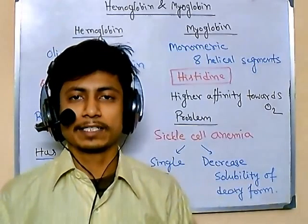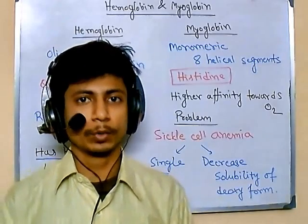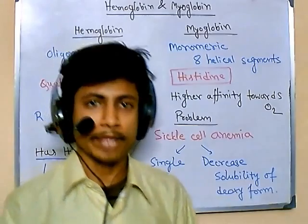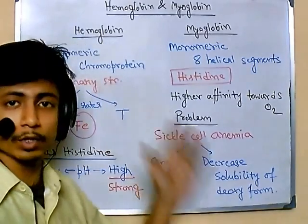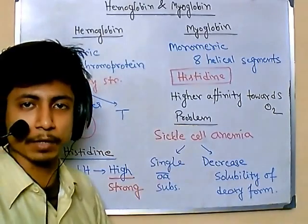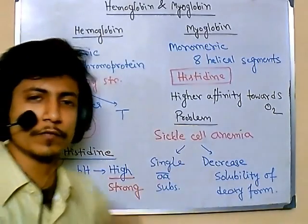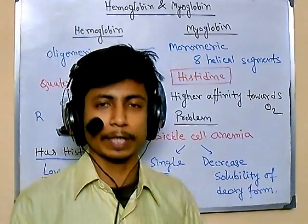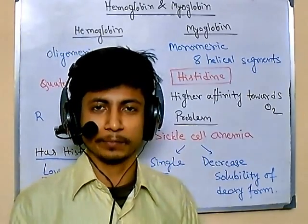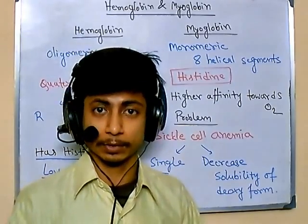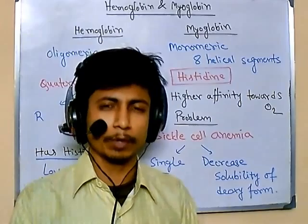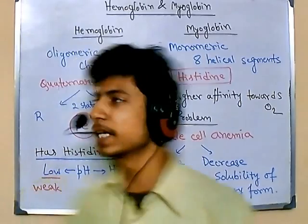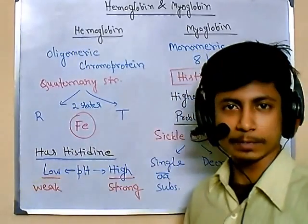Welcome again. CSI Net Module 1 — we are talking about biochemistry, and in this video we'll be talking about hemoglobin and myoglobin, two very important proteins in our body which are required to function properly. Let's talk about them — some slight differences, some important properties and facts. Let's begin with hemoglobin.